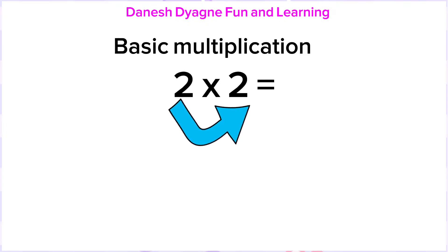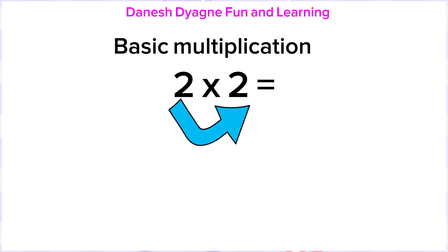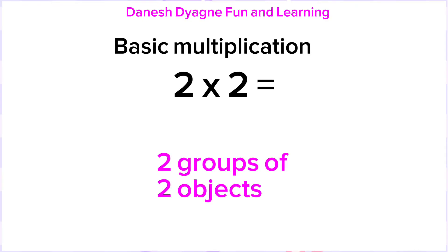Two times two, or two multiplied by two. We use objects to be able to multiply numbers quickly. First, we need to make two groups of two objects. Let's make two groups first.